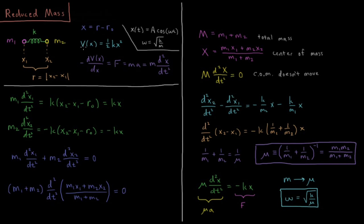They feel a potential energy function between them where V(x) equals 1/2 kx². x is defined as the bond length minus the equilibrium bond length R0, and R is defined as the absolute value of x2 minus x1, the position of atom 2 minus the position of atom 1.